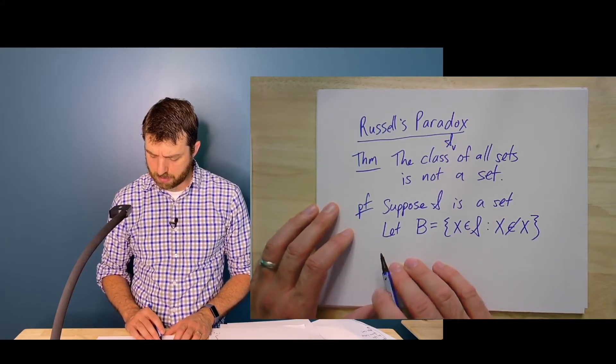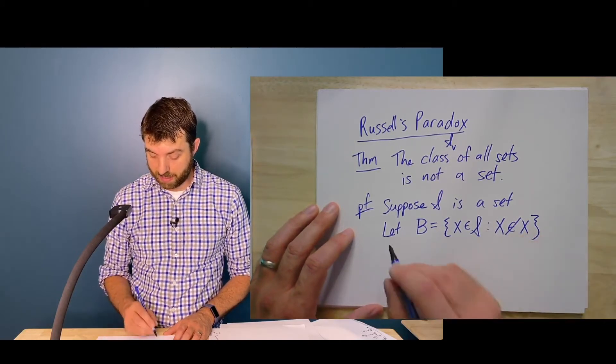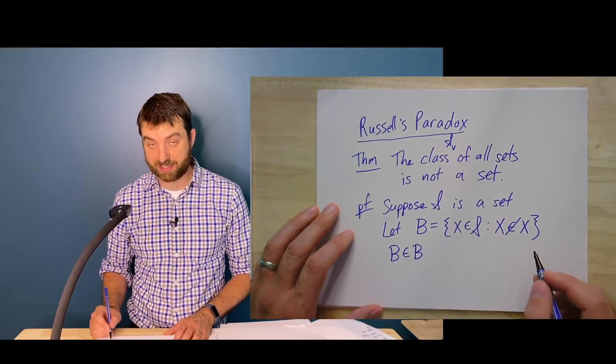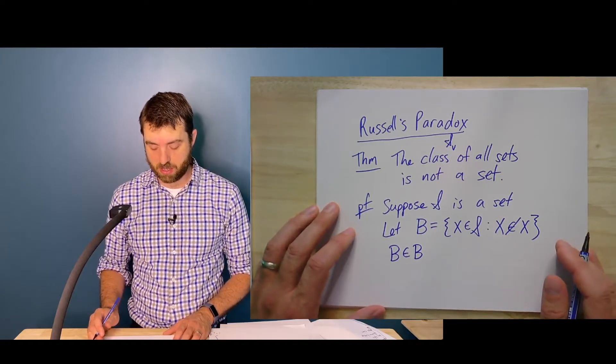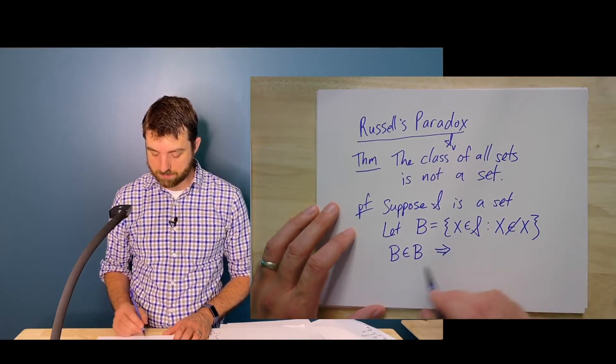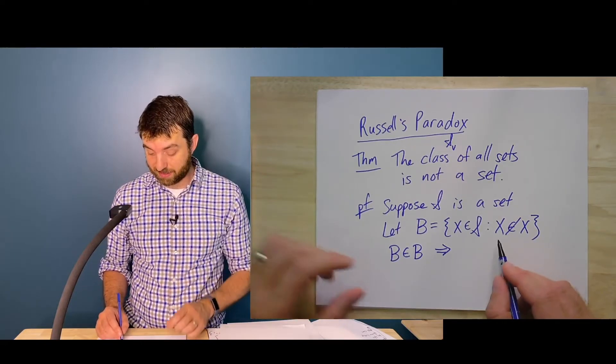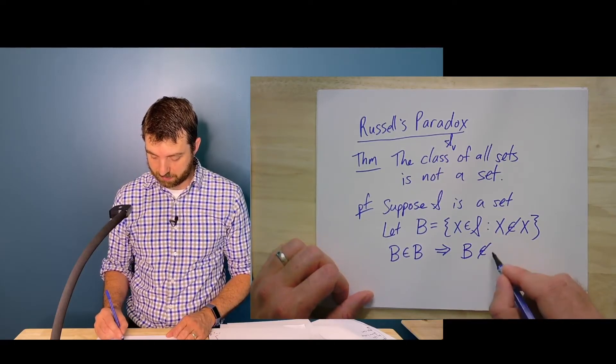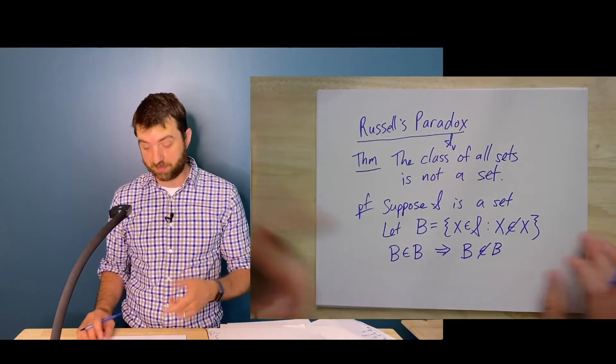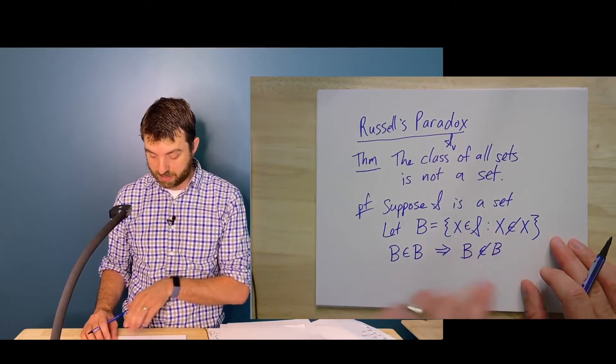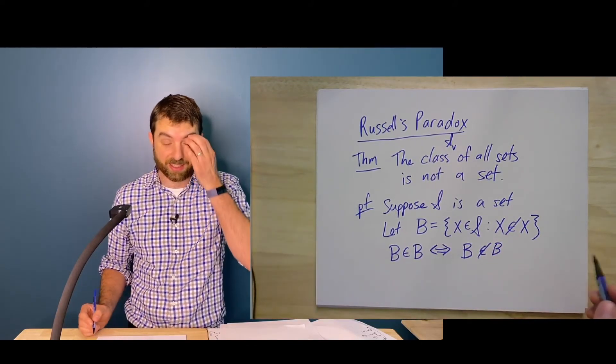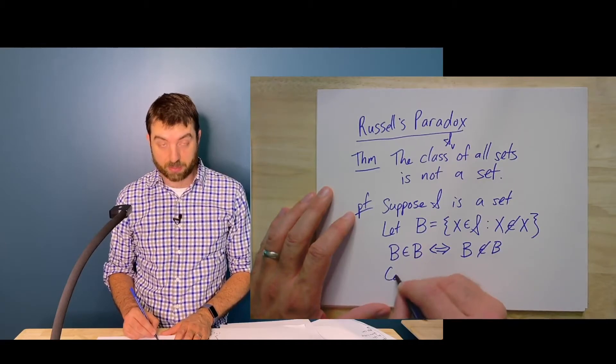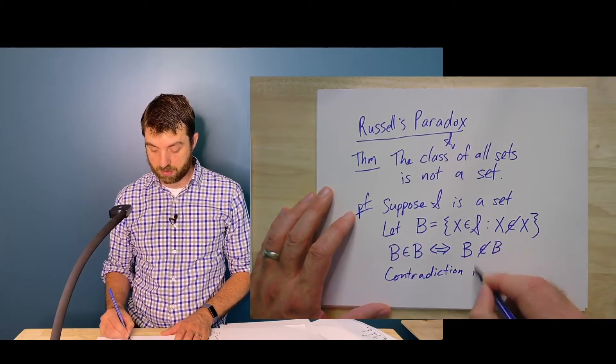Then I've got a little problem because I have to ask, if B is an element of B, that is, if this set contains itself, then it doesn't contain itself because it's only the things that don't contain themselves. That would imply that B is not an element of B. And the converse is also true, right? So if B is not an element of B, then that's the definition of what it means for a set to be in B. So this holds if and only if. So B is an element of B, if and only if it's not an element of B. That's clearly a logical contradiction. And so the contradiction implies that S is not a set.